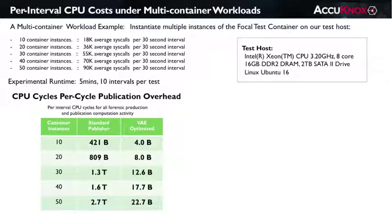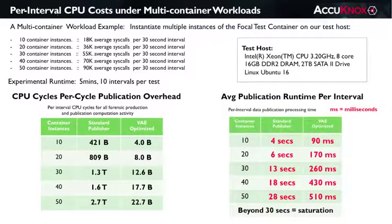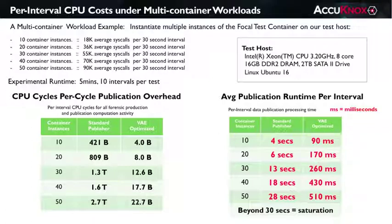This bottom-left table shows the number of CPU cycles that were consumed on our host to process and publish the forensics. The table compares the CPU cost per 30-second interval in billions or trillions of CPU cycles. Let's take a quick look at how these numbers translated to the average processing time per interval. Here we can also start to observe the notion of saturation — if our cache interval is set to 30 seconds but the processing time to publish an interval starts to exceed 30 seconds, the forensic publishing will become overwhelmed. After a bit more than 50 containers, the standard method would take longer to publish an interval's data than the interval itself. The VAE-optimized publisher takes on average only 510 milliseconds to process the intervals involving the 50 container instances.